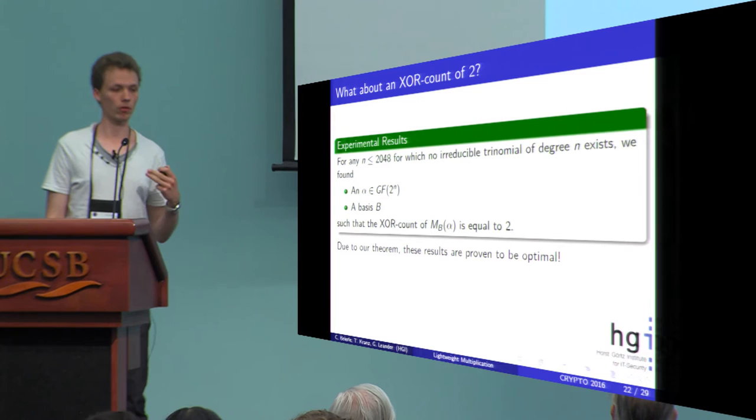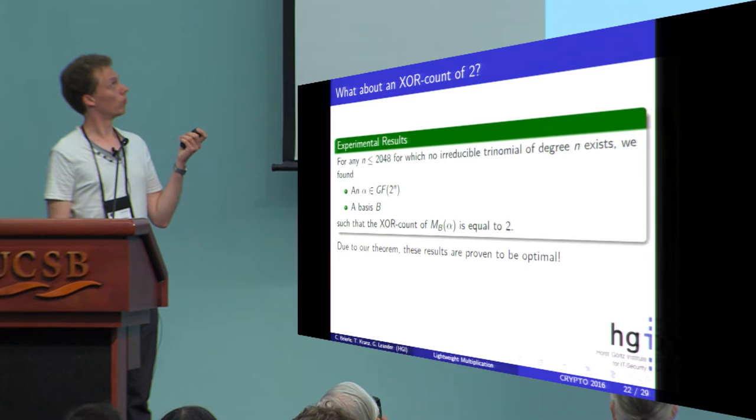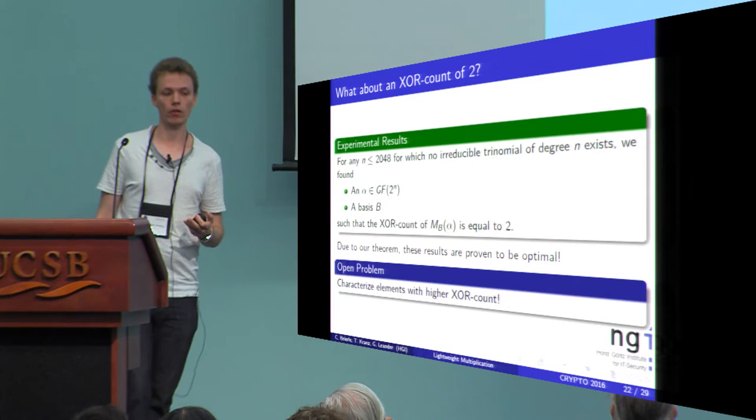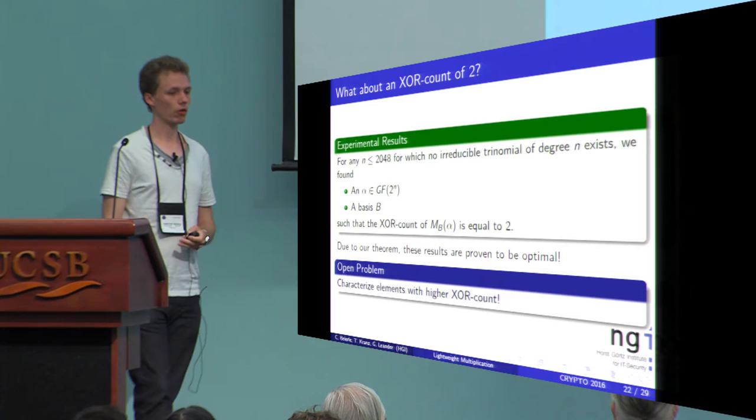We found optimal XOR counts for fields up to GF(2^48). It is open to characterize elements with higher XOR count in general, because the structure seems to be quite difficult to capture.